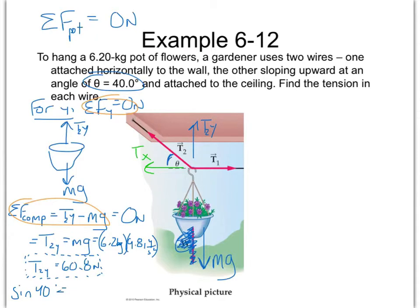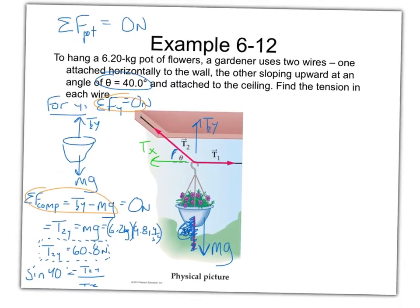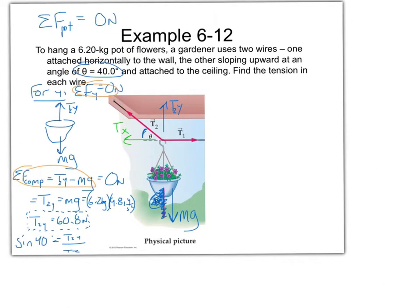Then we can say we're solving for tension in line two. So let's just move our T2 over and up and divide by our sine of 40. So tension in line two is going to be T2y divided by the sine of 40 degrees. Well, we know our T2 in the y direction, that's 60.8 newtons, and our sine of 40 degrees.